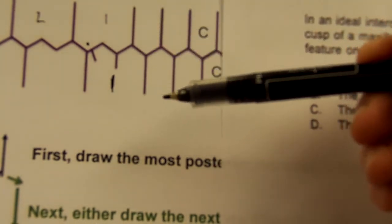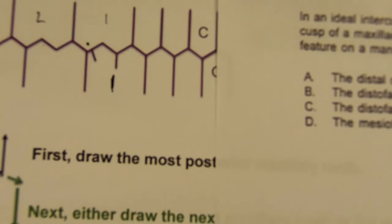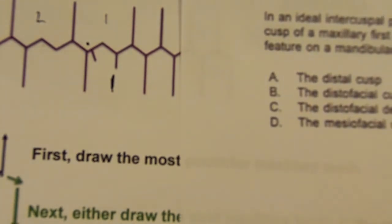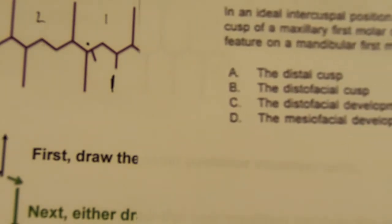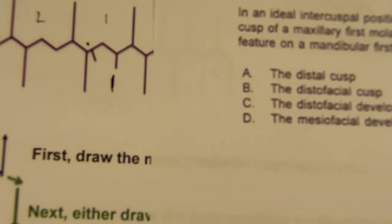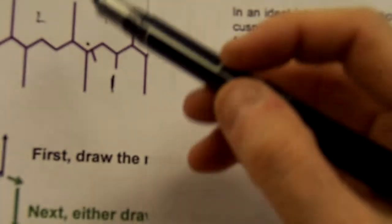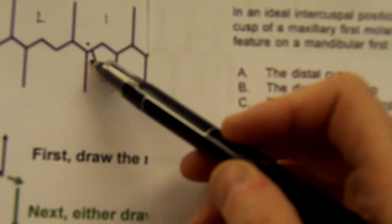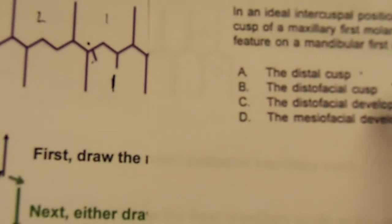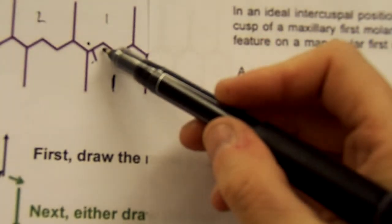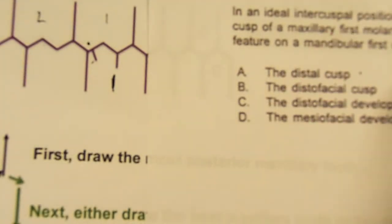Maxillary facial cusps — are they occluding or are they the non-centric cusp? Maxillary facial cusps are non-centric cusps; maxillary lingual cusps would be centric cusps. When reading through the selections, we're close to the distal cusp — so that's a maybe. The distal facial cusp is closest to the central fossa.